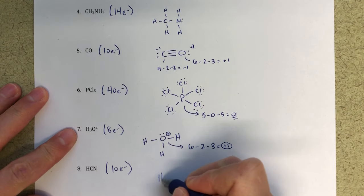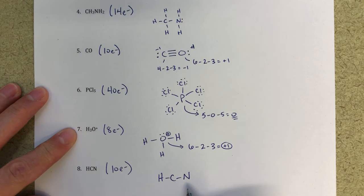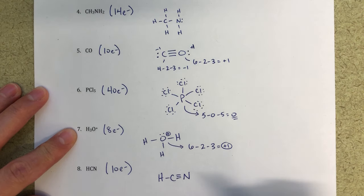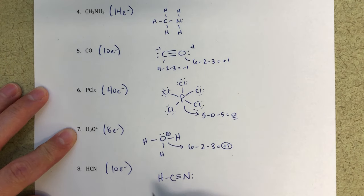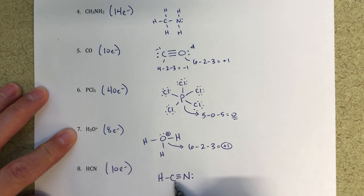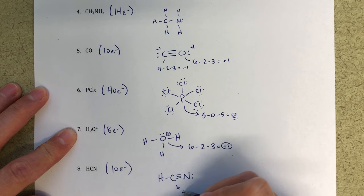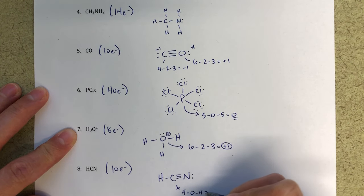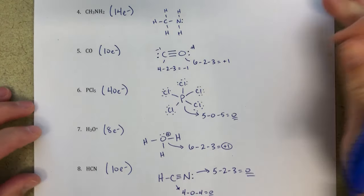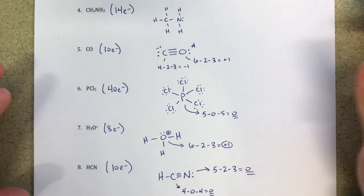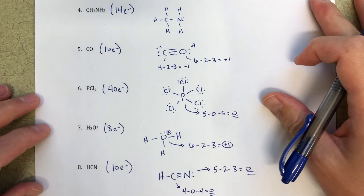HCN: the skeleton structure has a triple bond between carbon and nitrogen. Carbon prefers four bonds — one bond to hydrogen plus a triple bond to nitrogen satisfies that. Nitrogen gets a lone pair of electrons. Counting electrons: 2, 4, 6, 8, 10 — all 10 electrons are accounted for and the octet rule is fulfilled for carbon and nitrogen. Formal charges: carbon four minus zero minus four equals zero; nitrogen five minus two minus three equals zero. All formal charges are zero. If you have any questions about any of these Lewis dot structures, feel free to comment below.